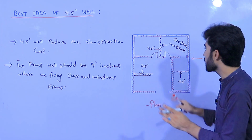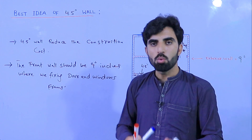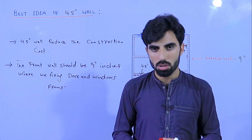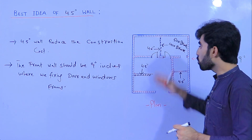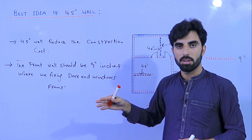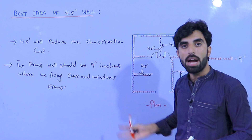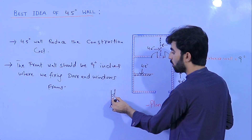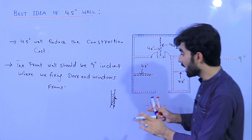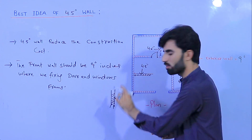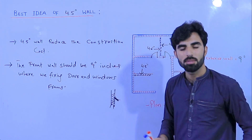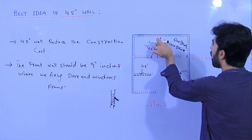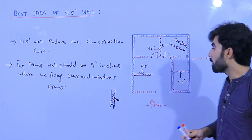One important thing: especially in washrooms or bathrooms where you are fixing sanitary work, we should not use 4.5 inch wall. Because there we are fixing pipes for taps, showers, and other sanitary works. A 4.5 inch wall cannot give support to those pipes, so the sanitary wall must be 9 inches.